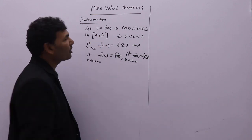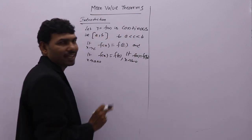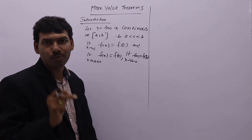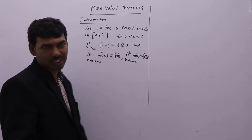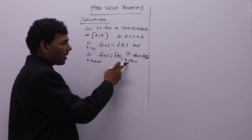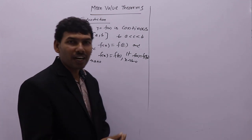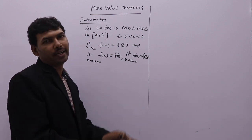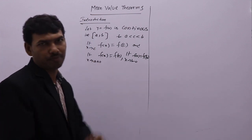A function is said to be continuous in closed interval [a, b] if, for every point c between a and b, the function is also continuous there. A function f(x) is continuous at a particular point c if it satisfies: limit as x→c of f(x) = f(c). Continuity in [a, b] means the function is continuous at every point from a to b, inclusive.